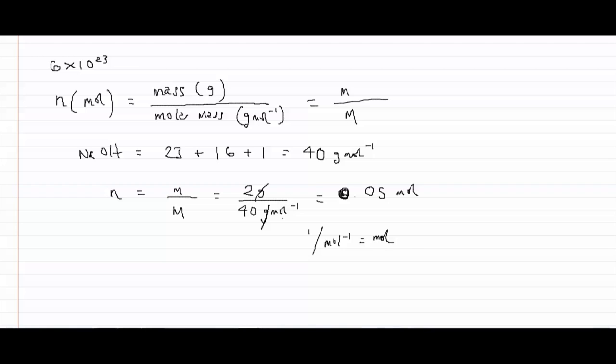The grams have cancelled themselves out, and the 1 over moles, the minus 1 on the bottom, becomes moles on the right-hand side of the equation there. So in 2 grams of sodium hydroxide, we have 0.05 moles.